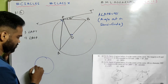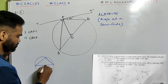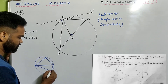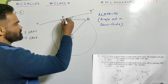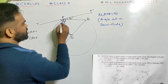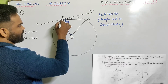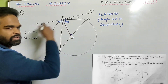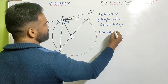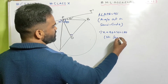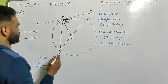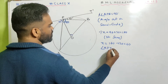So with angle APB as 90 degrees, TPT dash is a straight line. X plus 90 plus 30 equals 180. So X equals 180 minus 120, which is 60 degrees. X is angle APT, so angle APT is 60 degrees.